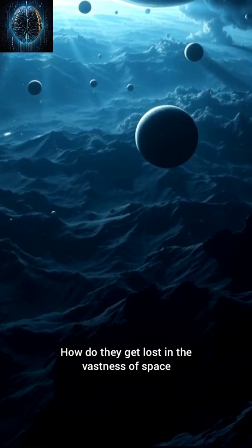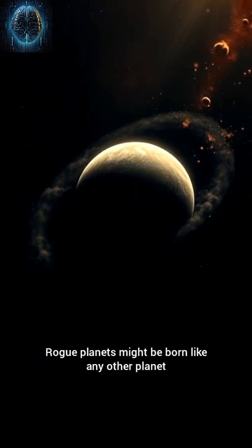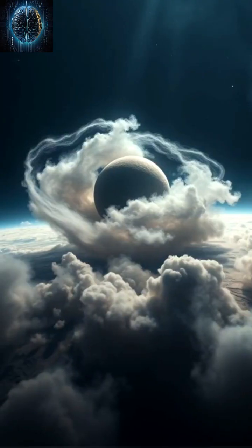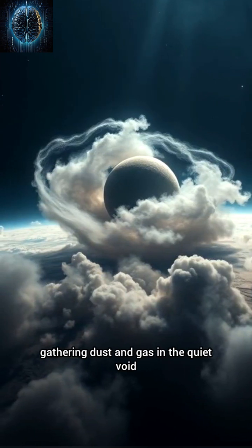How do they get lost in the vastness of space? Rogue planets might be born like any other planet, but are ejected by chaotic gravitational forces. Others may form alone, gathering dust and gas in the quiet void.